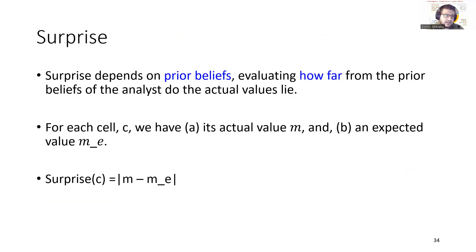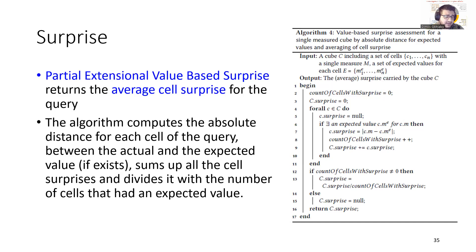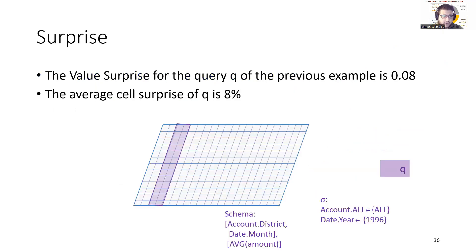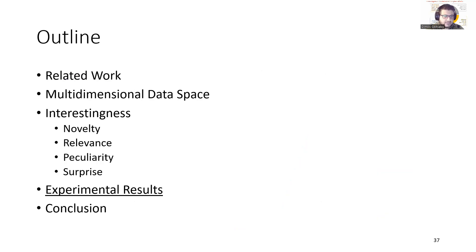Finally, surprise is a measure that depends on prior beliefs, evaluating how far from the prior beliefs of the analyst the actual values lie. For each cell, we have its actual value M and an expected value ME, and the absolute distance between M and ME is the surprise of that cell. The surprise algorithm returns the average cell surprise for the query — computing the absolute distance between actual and expected value for each cell, summing all cell surprises, and dividing by the number of cells that had an expected value. For the query in our example, the average cell surprise is 8%.